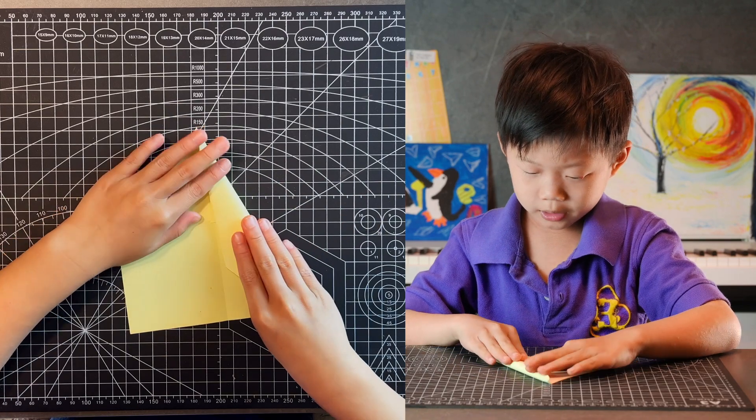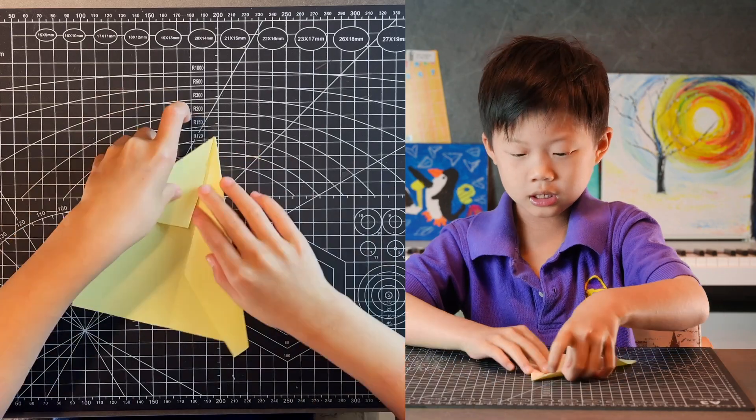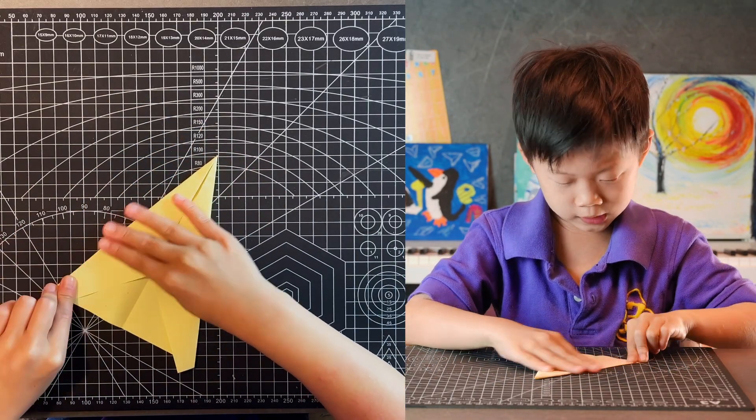Fold your top edge into your center crease again, leaving just a tiny gap. Do the same thing on your other side.